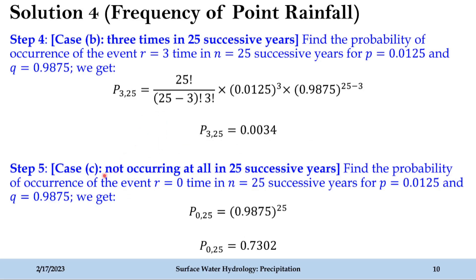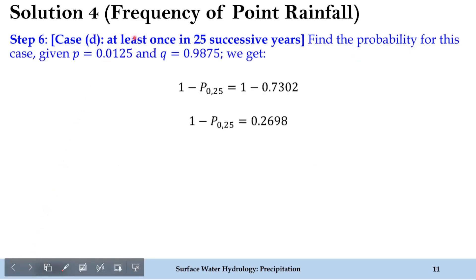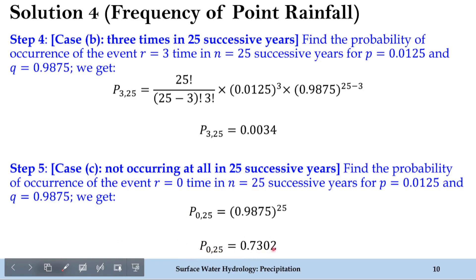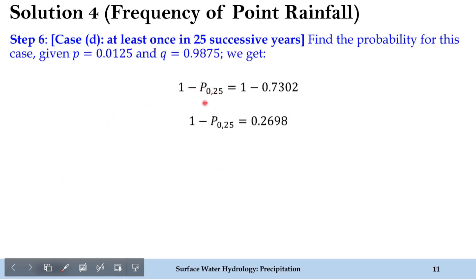Let's solve case C: not occurring at all in 25 successive years. Here r = 0 and n = 25. If you substitute r = 0 in the binomial equation, you are left with only q^n. So this is q = 0.9875 raised to the power n = 25. Substituting, we get the probability of not occurring at all as 0.7302. For case D — at least once in 25 successive years — we simply subtract: 1 minus the probability of not occurring at all.